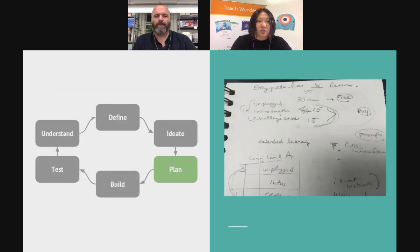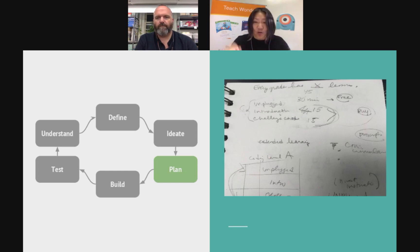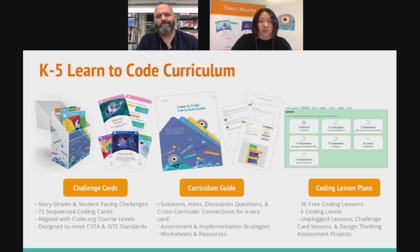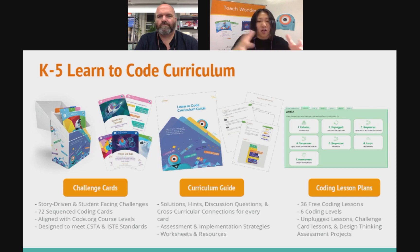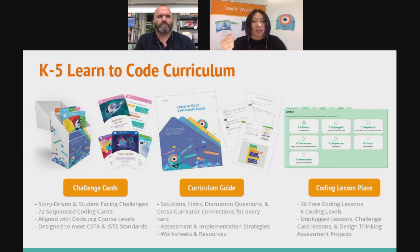We've got 10 minutes left. We'll try to finish the presentation by 3, and then for people who have questions, stay afterwards — we'll stay on for another 10 minutes to answer them. The next two phases are the prototyping phase — planning and building. This little scribble is my initial plan of our K-5 curriculum, where I outlined the different components and planned how many lessons we were creating and how many challenge cards we wanted to make. We defined three components: challenge cards, a curriculum guide with solutions, hints, assessment strategies, worksheets, and resources, and free lesson plans online that could be constantly updated.